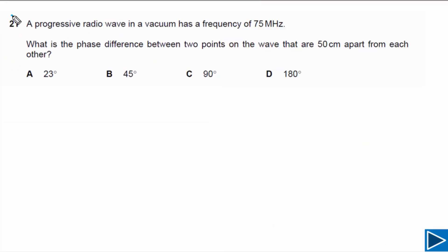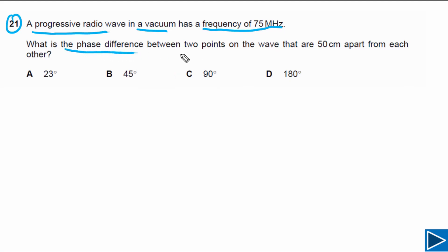For question number 21, a progressive radio wave in a vacuum has a frequency of 75 megahertz. We need to find out what is the phase difference between two points on the wave that are 50 centimeters apart from each other. We need to find the phase difference between two points, and the distance between those two points is given to us.